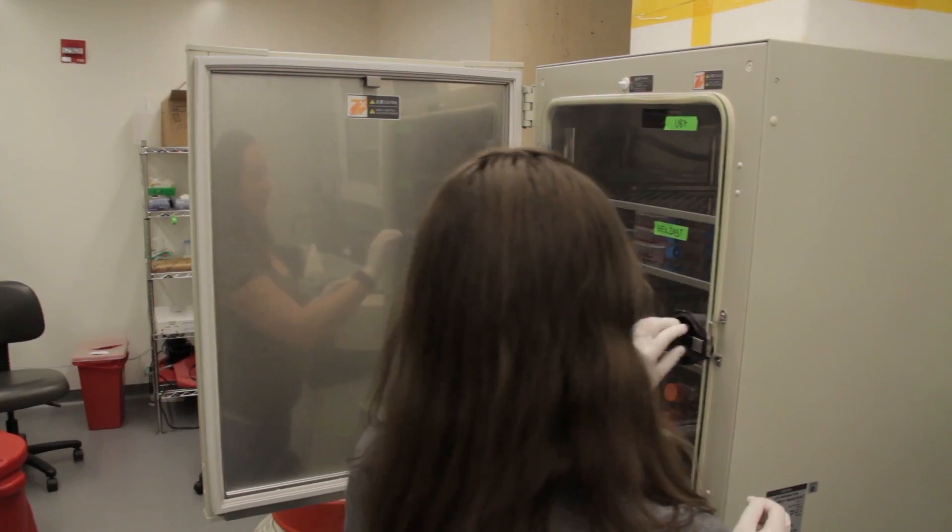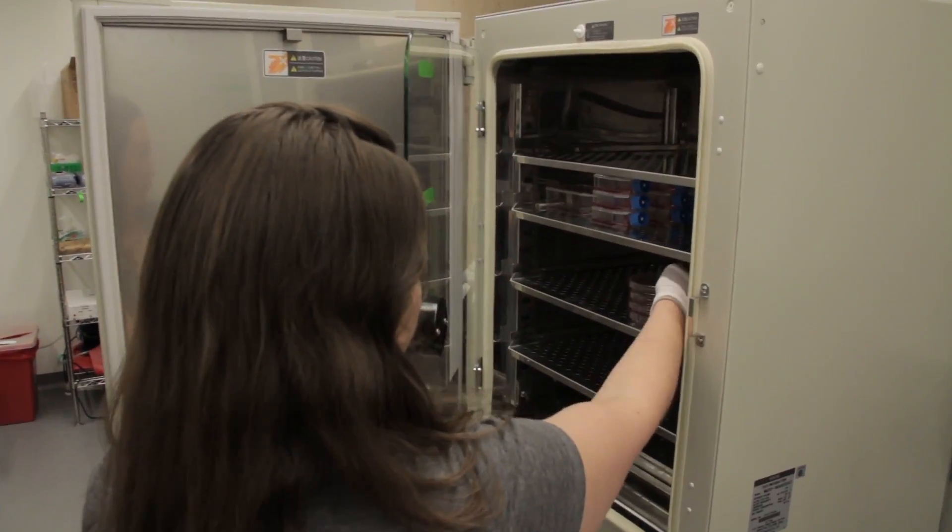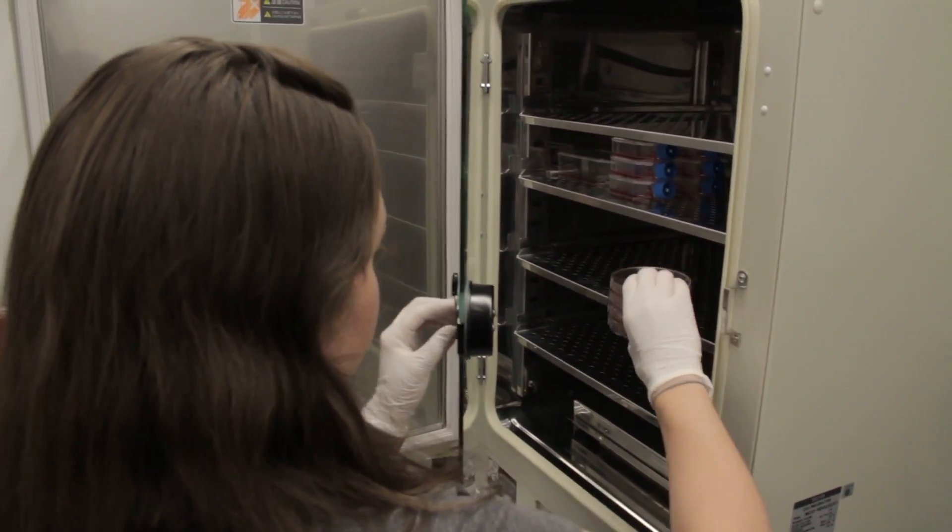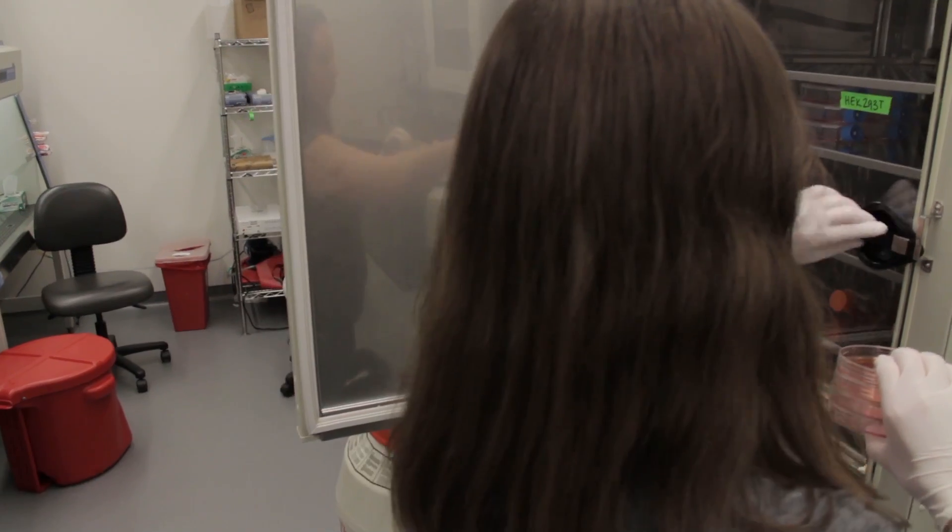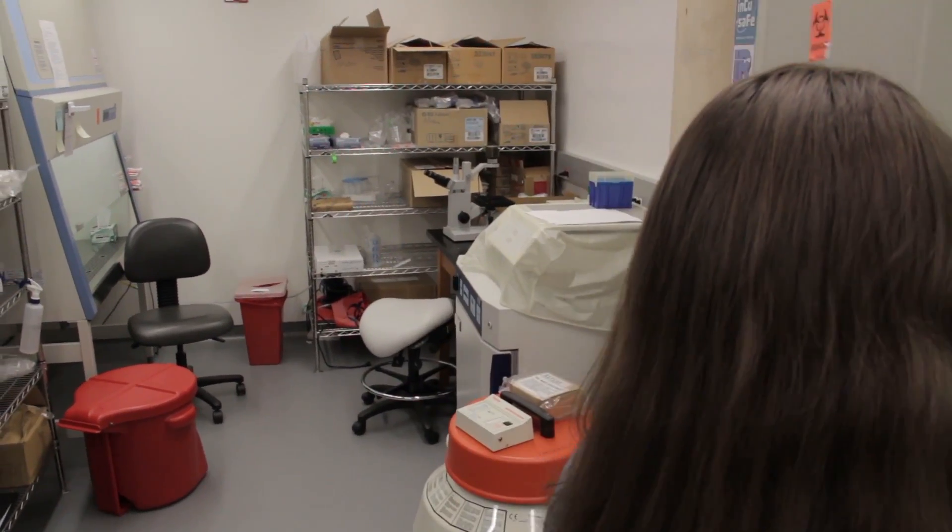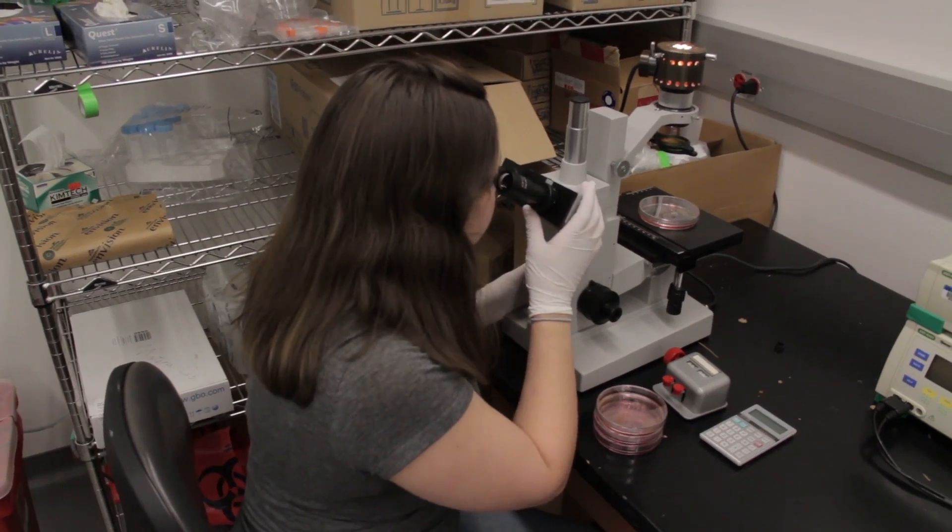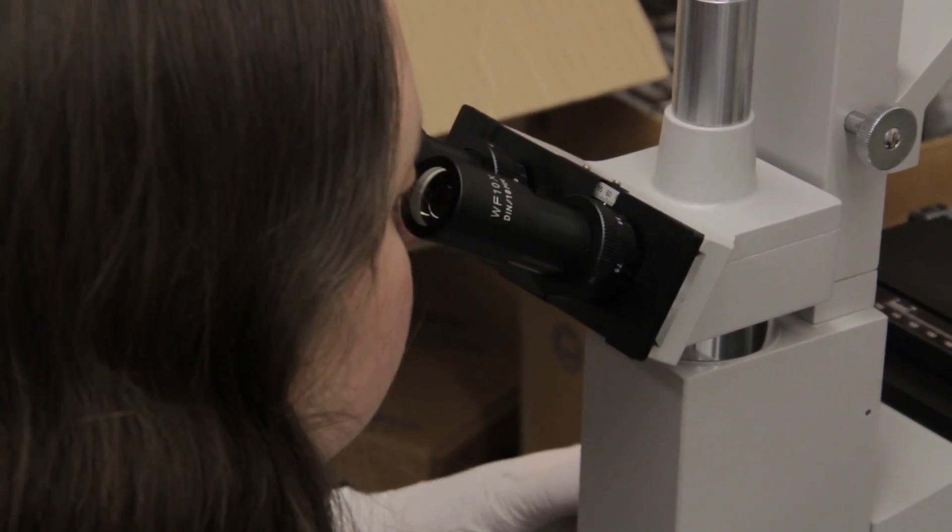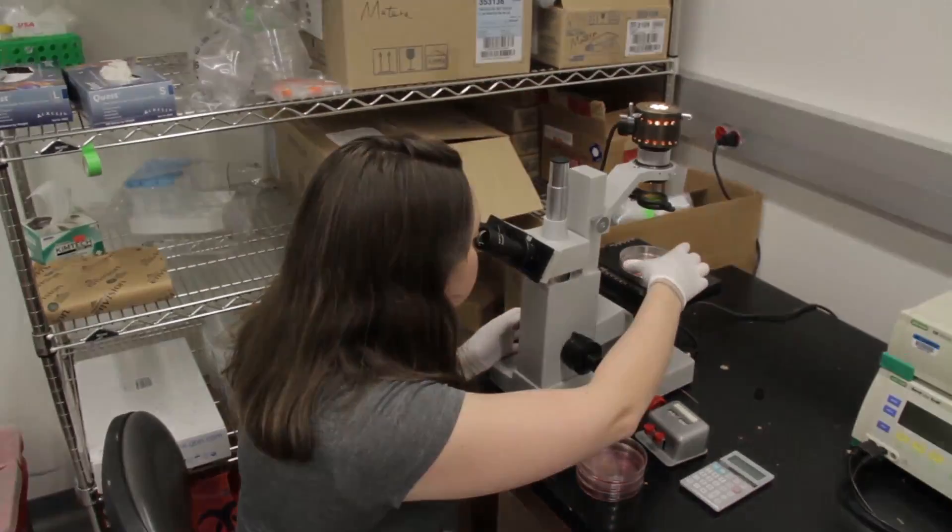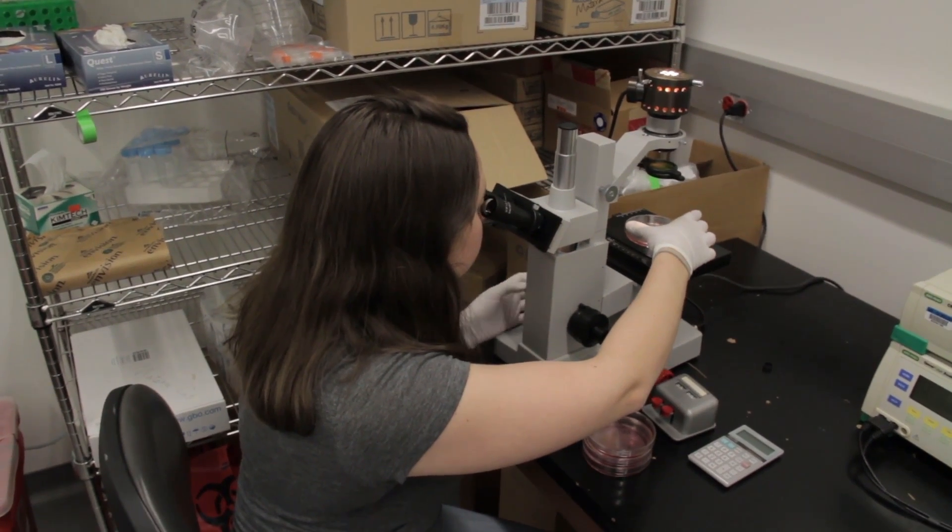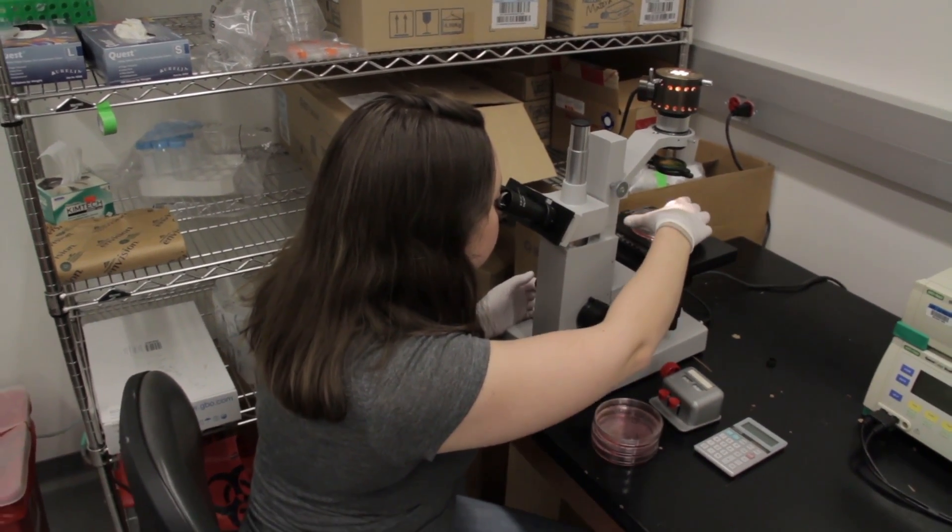This is an incubator where we keep our cells—we've got a couple different kinds in here. This is an inverted microscope that lets us see the cells on the plate. We like to check and see what they look like and if they're growing well.